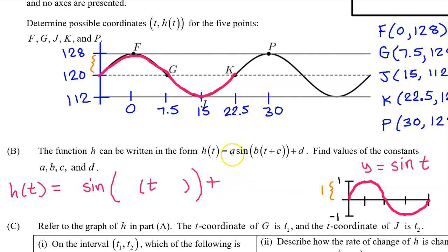The a value is the vertical dilation compared to the parent function. Notice that the distance from the midline to the maximum value is 1 on the parent function. Now that same distance from the midline to the maximum value on the graph of h(t) is 8. This vertical dilation by a factor of 8 means that the a value is 8. In the context of periodic functions, this is called the amplitude.